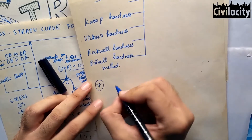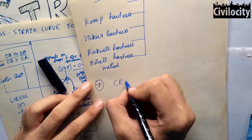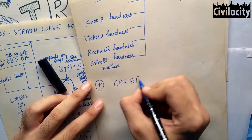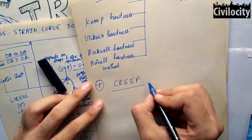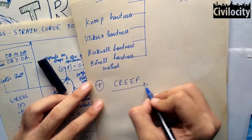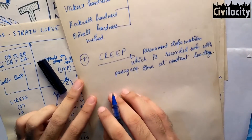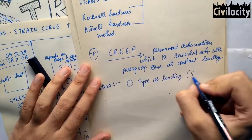Our most important property is creep. Creep is the additional permanent deformations which are recorded over the passage of time. It depends on how you are loading — whether the load on the material is static or dynamic.